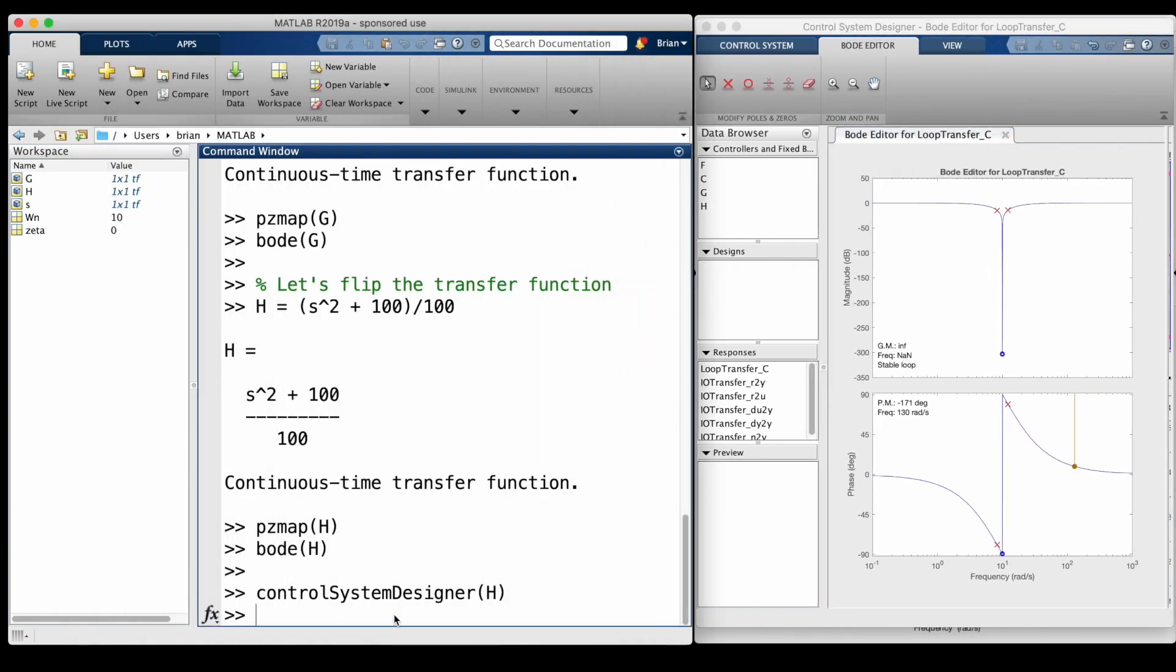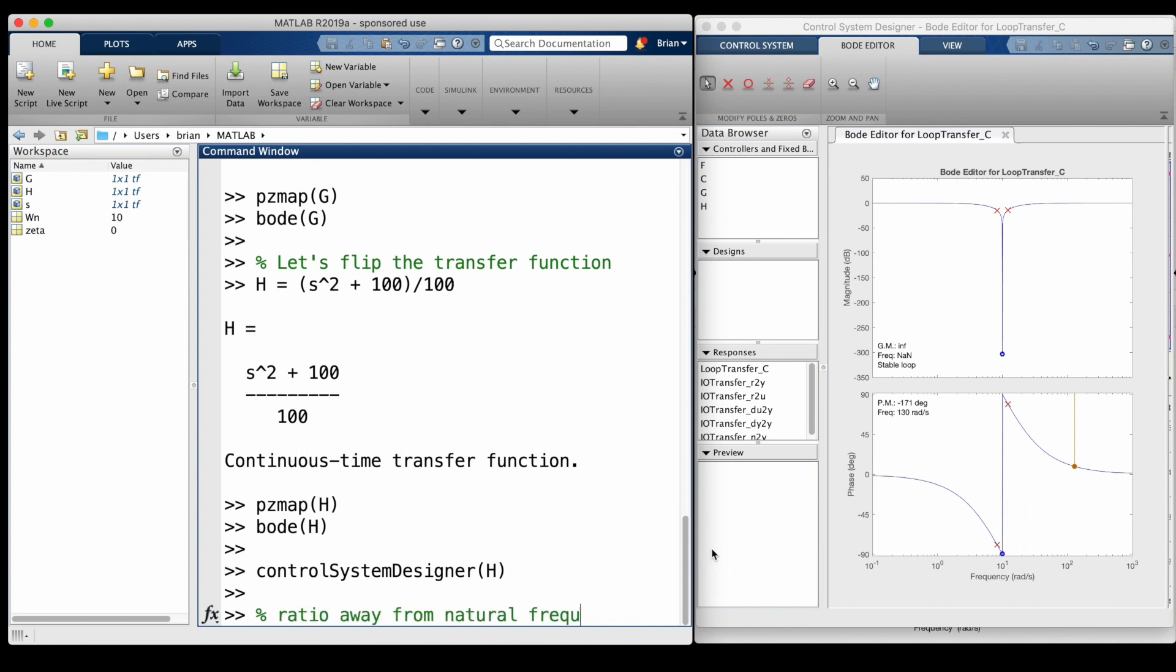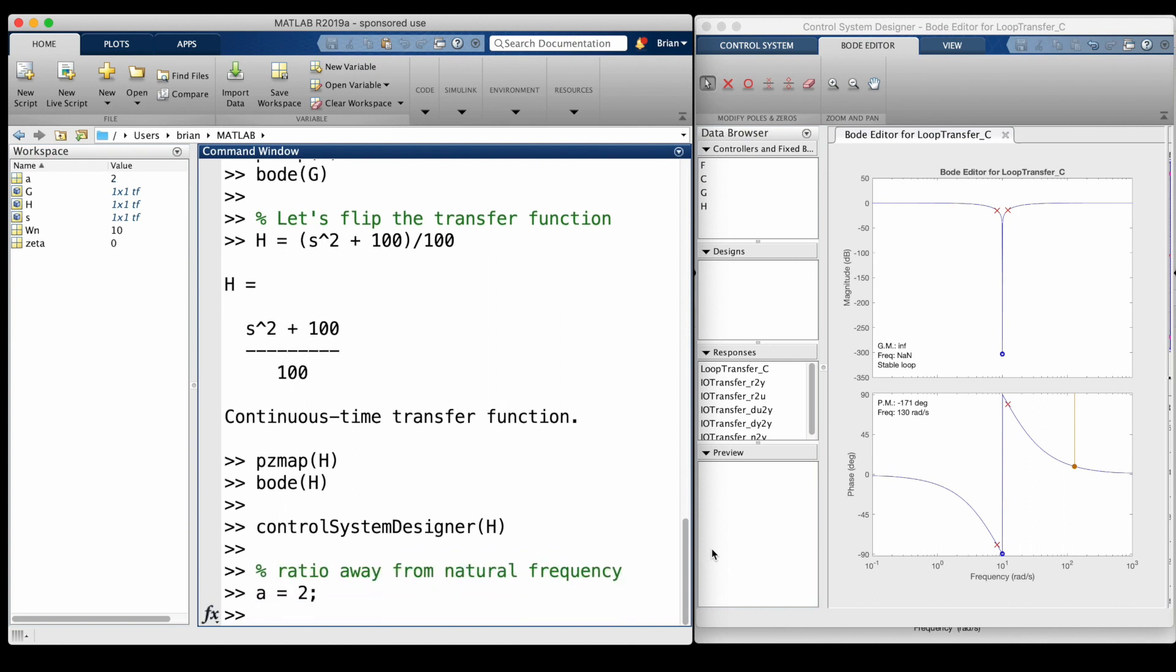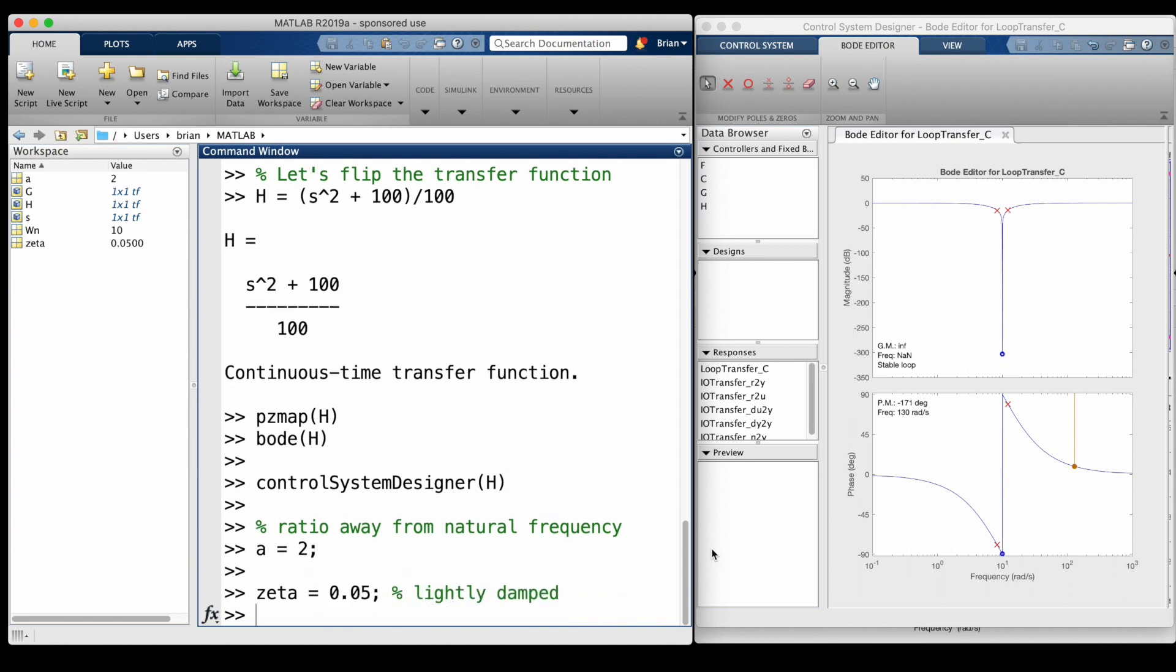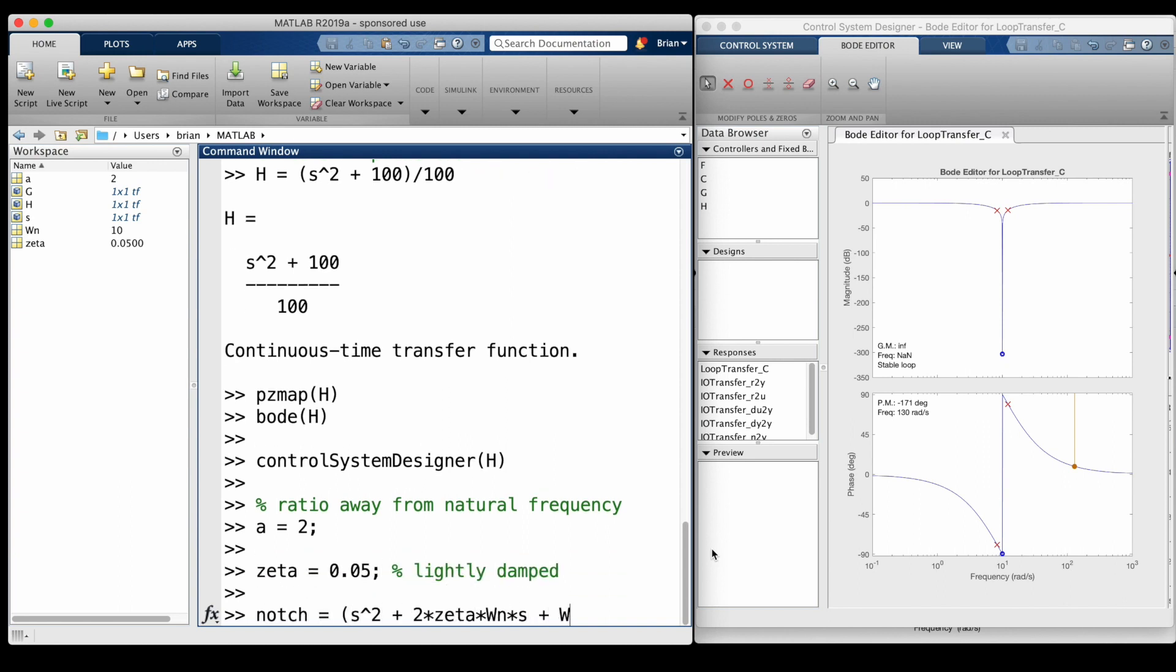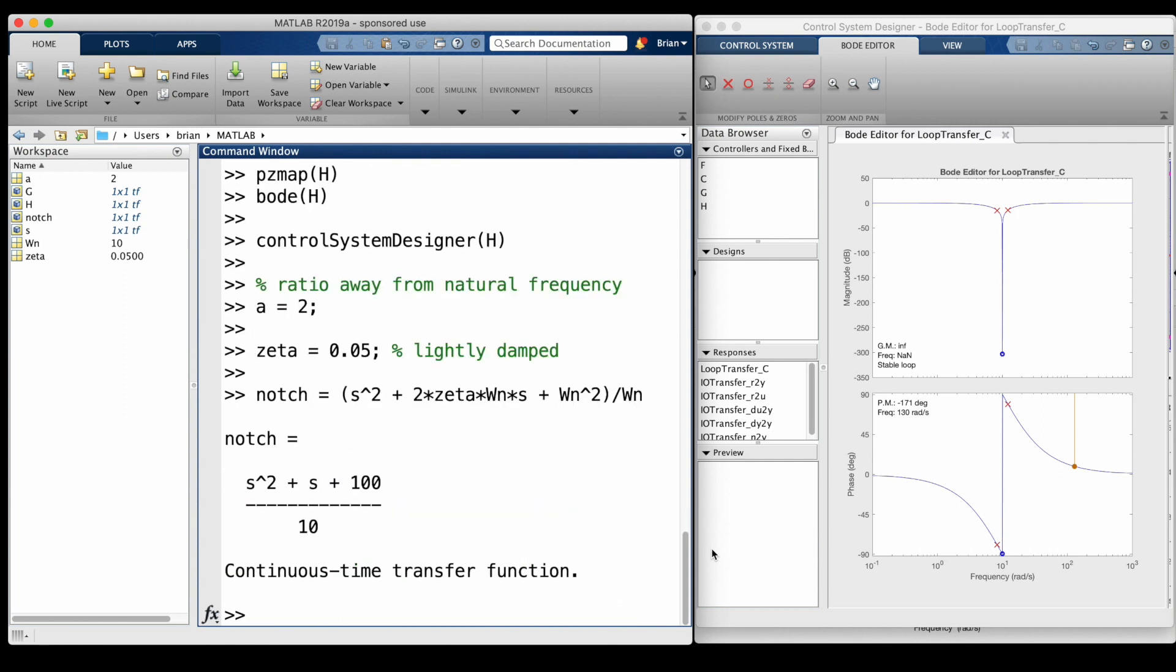And the transfer function math works out as well. I'll start by defining the variable a as the ratio that each pole is away from the natural frequency, so that the larger values correspond with a wider notch. Now we can create a lightly damped pair of zeros centered at the natural frequency to get our unrealizable transfer function and the start of our notch.